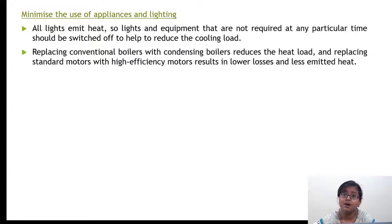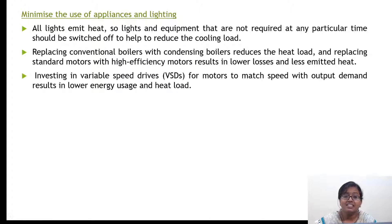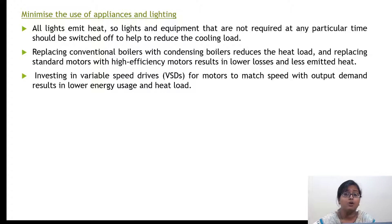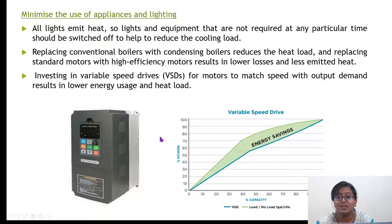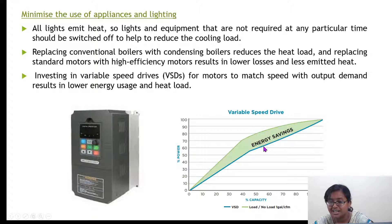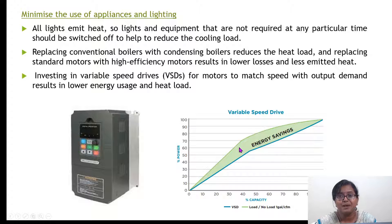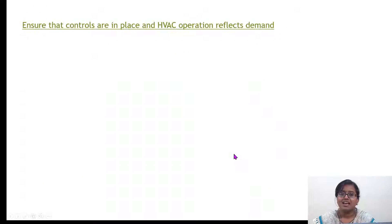Another technique is replacing conventional boilers with condensing boilers — if we have more efficient boilers, energy conservation is achieved. Also, investing in variable speed drives for motors is important, because conventional motors consume more energy. If we replace them with variable speed drives, a lot of energy saving can be achieved. Looking at the graph, the blue color indicates energy consumption with variable speed drives versus the much higher consumption with normal motors — a significant amount of energy and money is saved.